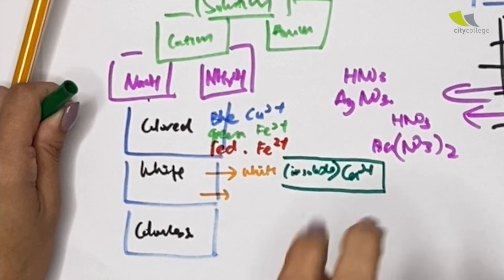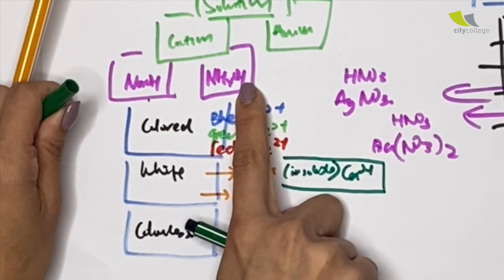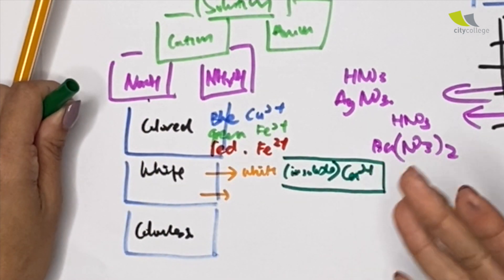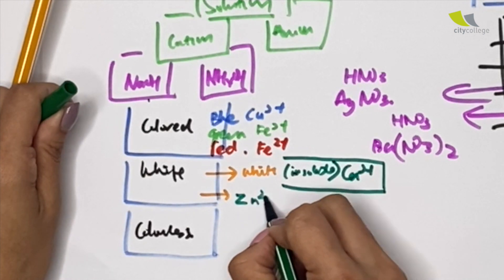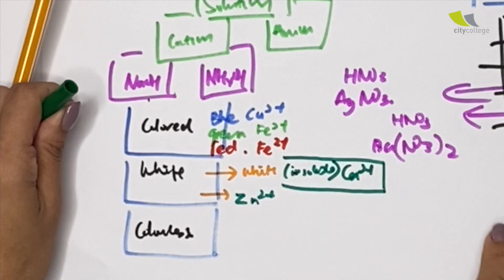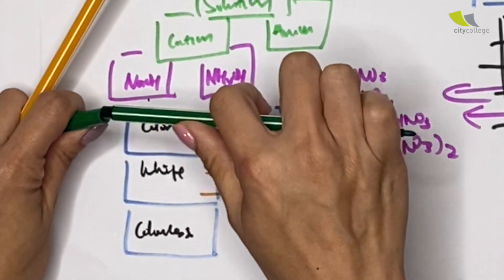Then the next one, whenever you add sodium hydroxide or even aqueous ammonia, they'll give you a white precipitate and they are soluble in excess. Who is the most soluble? Well, remember zinc, Zn2+. And Z is the last one, so the last A to Z—Z is the last one, is the most soluble.